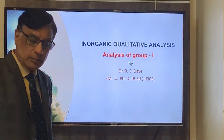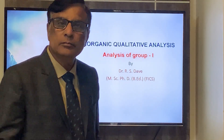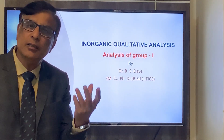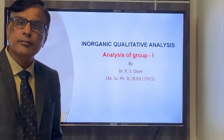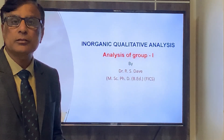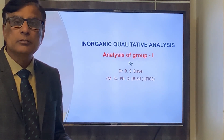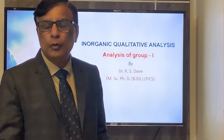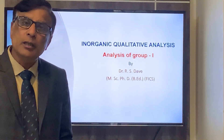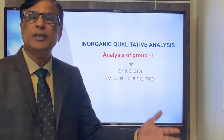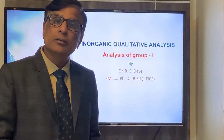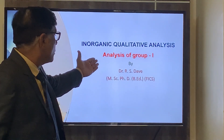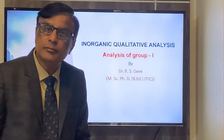If we get the precipitates, we think about how many cations are present in the mixture or which ones are present — only one, two, or more cations may be present in those precipitates. So, we should take the precipitates for the group analysis of Group 1.